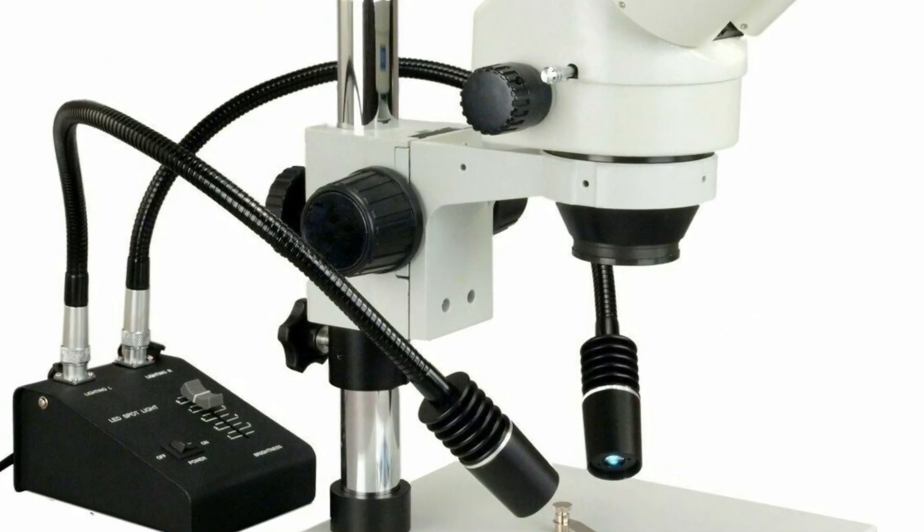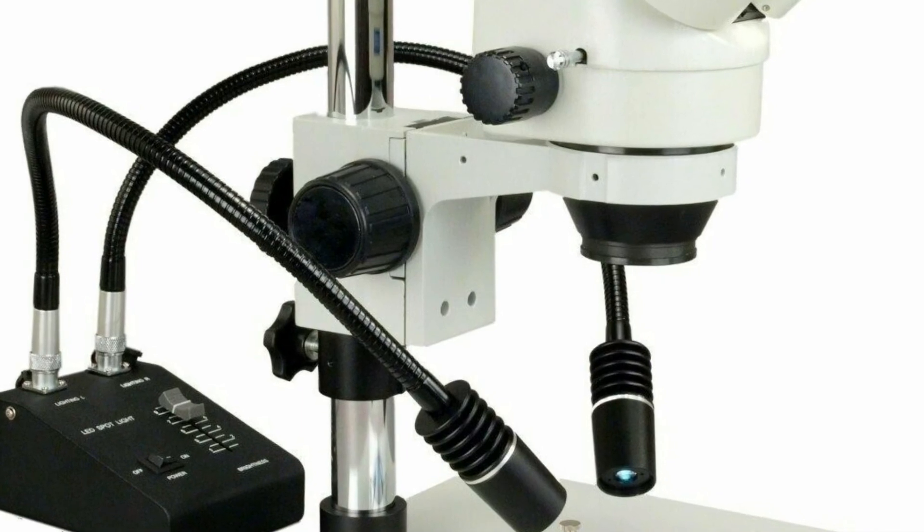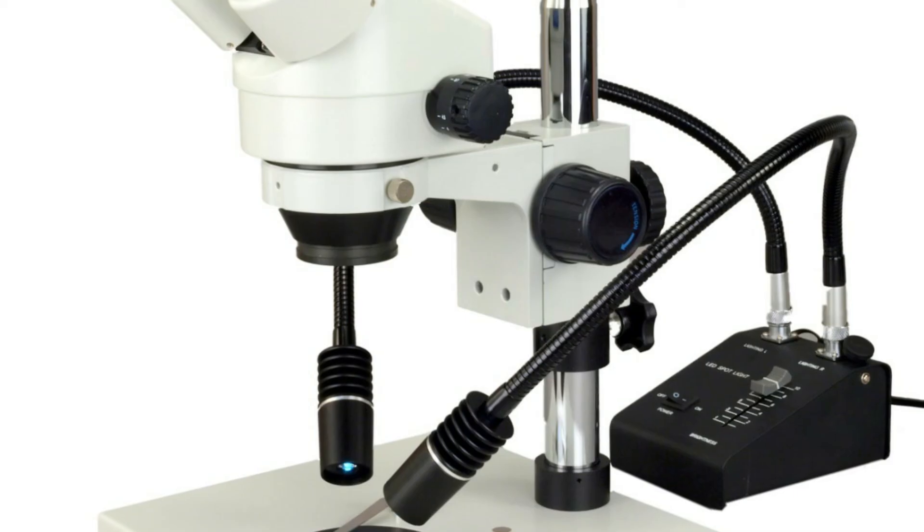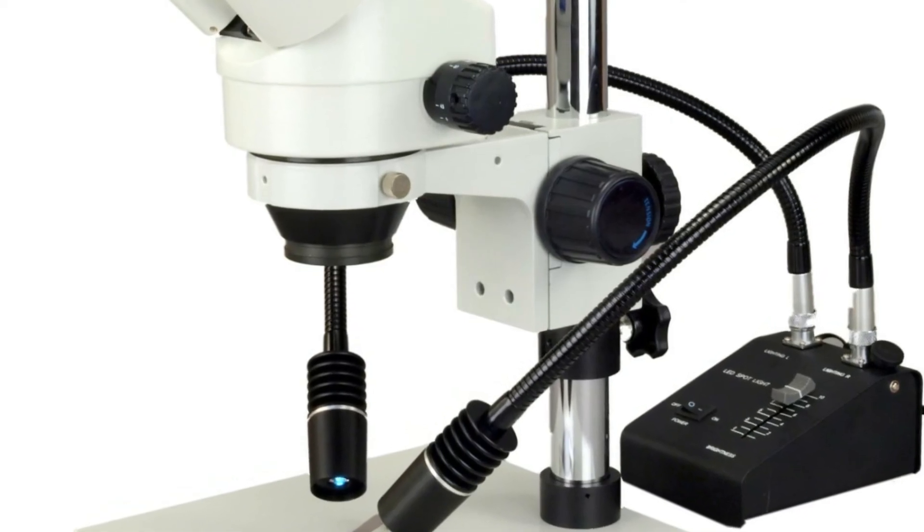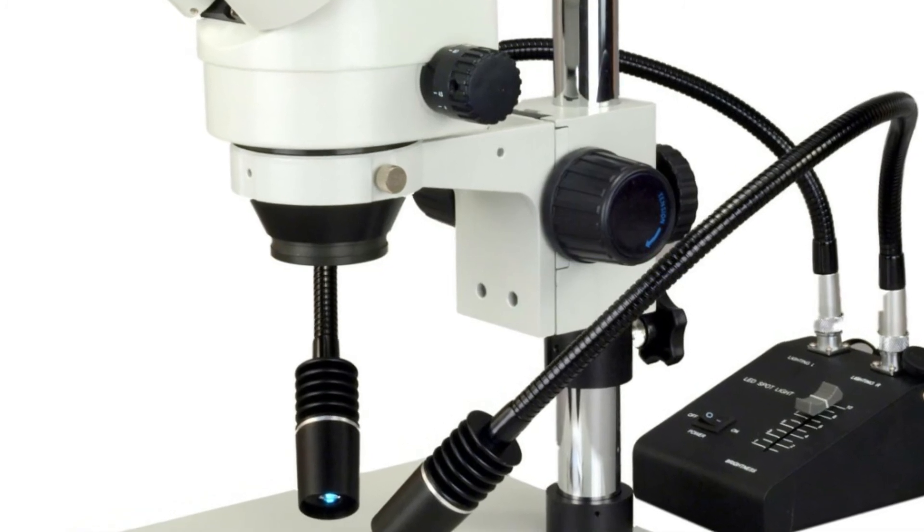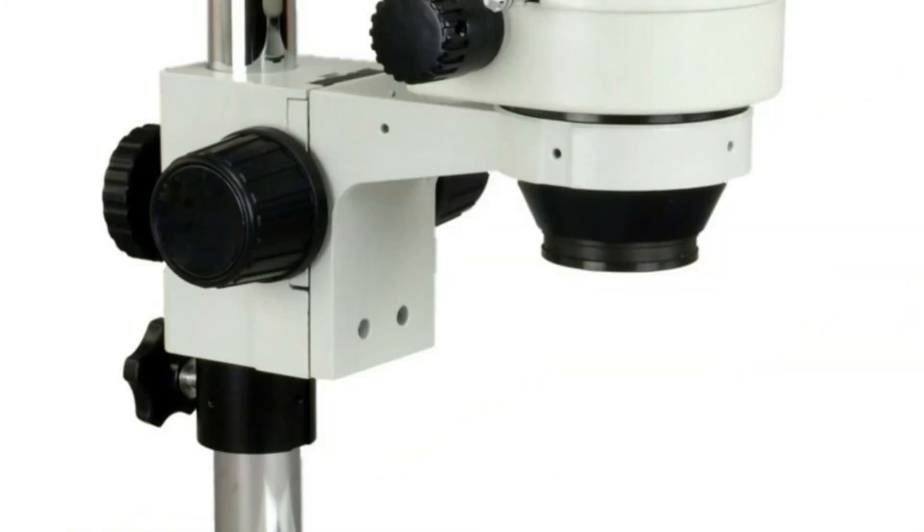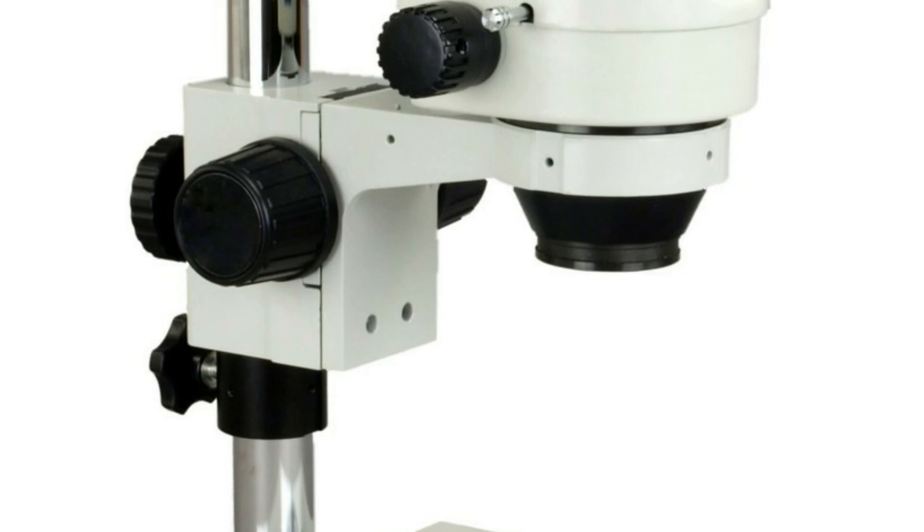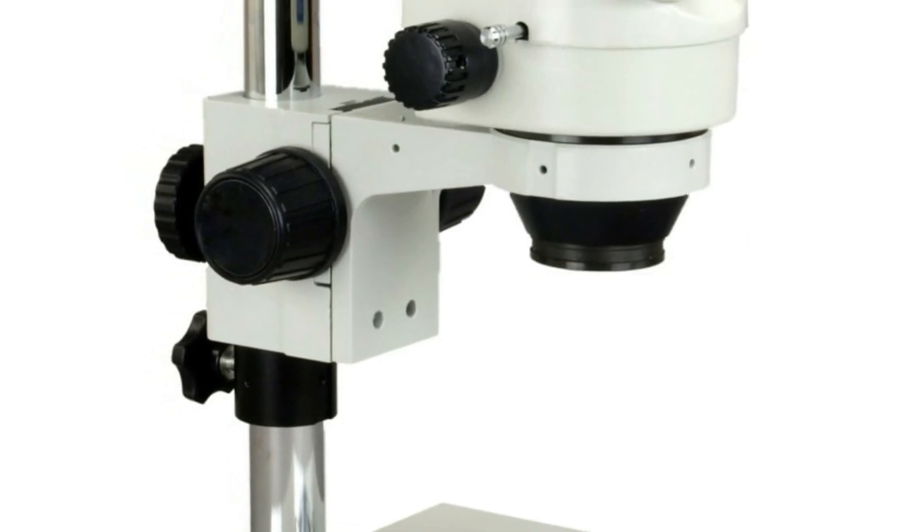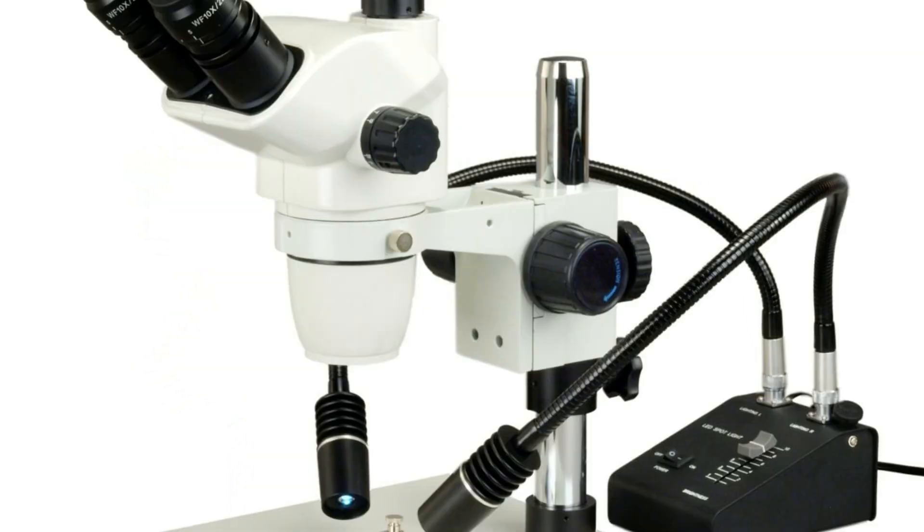At this time of writing, the 3.5x 90x 7x 45x simul focal trinocular microscope 0.5x 2.0x auxiliary lens plus zoom stereo microscope head black has garnered 1 customer review with a rating of 5 out of 5 stars. Not a bad score at all, as if you round it off, it's actually a perfect 5 already.